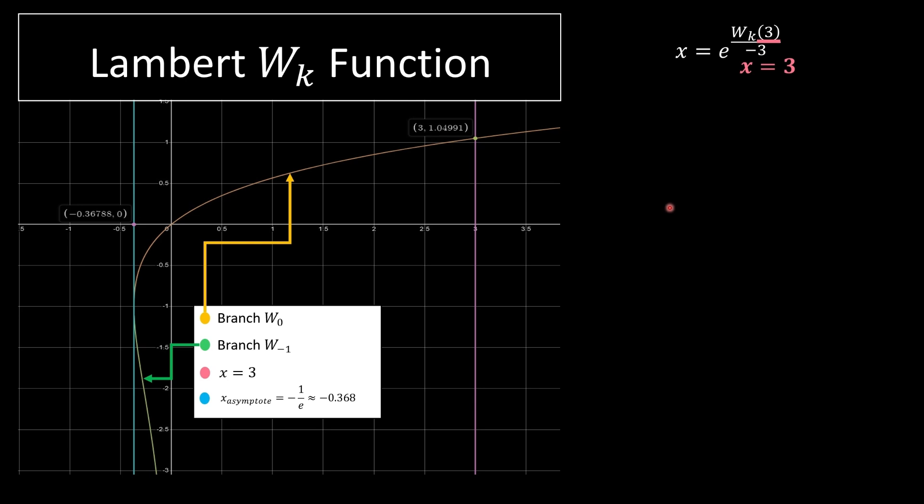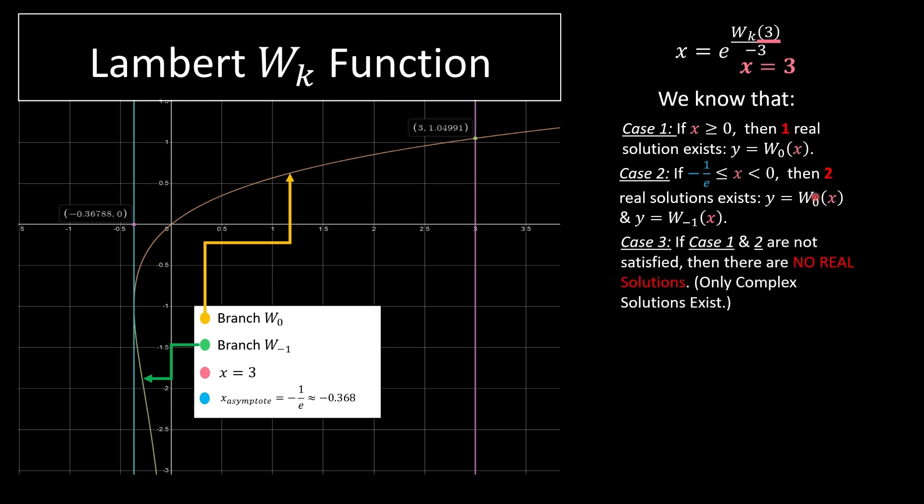Now to identify how many real solutions we have, we got to know this. So case 1, is our value over here greater than 0? And yes it is. So we're going to have one real solution. And here are the other cases. So basically if we had a value between the asymptote and 0, then we're going to have two real solutions. And if case 1 and 2 are not satisfied, then we have no real solution.